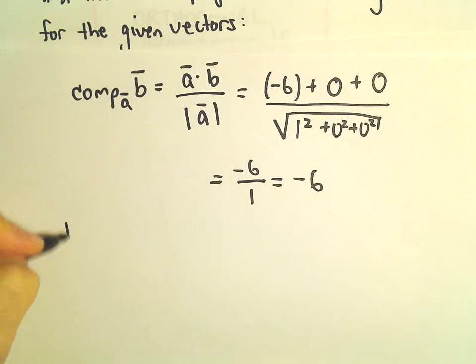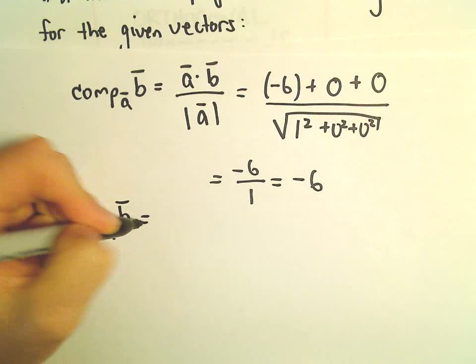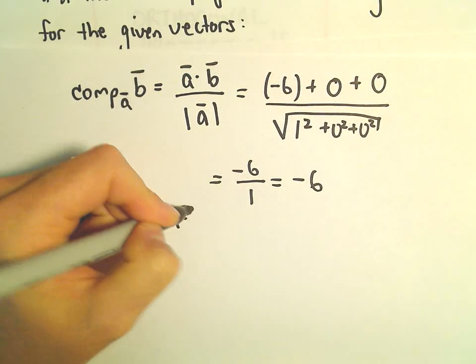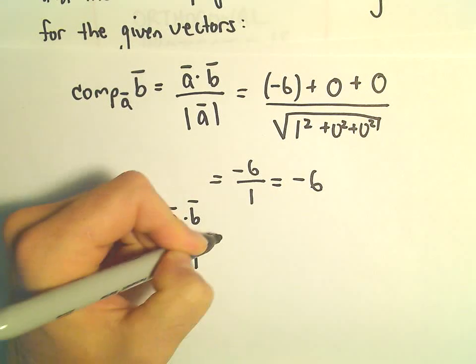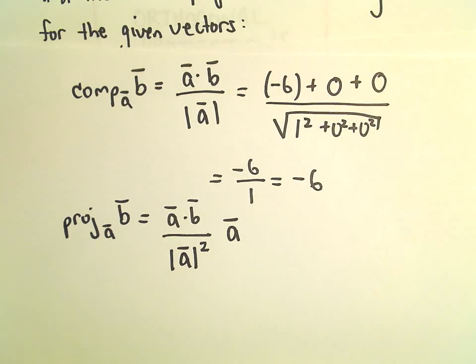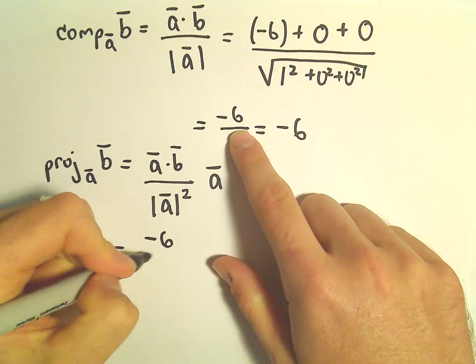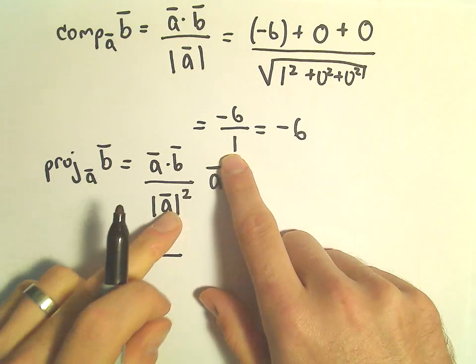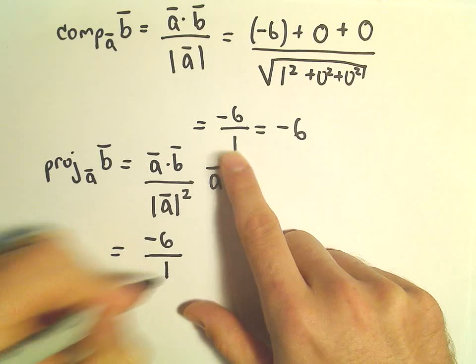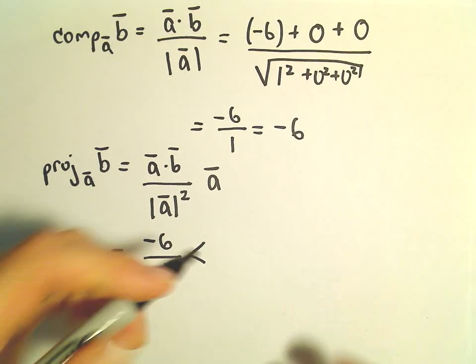To figure out the projection of vector B along A, again, we just do A dot B. We can divide that by the magnitude of A squared, and then we multiply that by vector A. So again, we've already figured out the dot product. We figured that was negative 6. If we take the original magnitude, which was 1, and we square it, we still get 1.